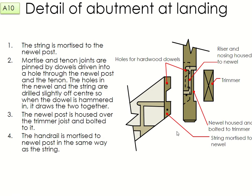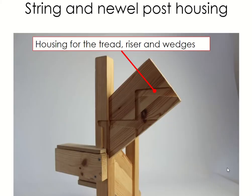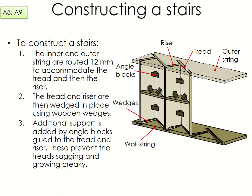You also need to label the parts of the construction image: the riser, the tread, and the two strings — one will usually be up against a wall, one will not. If your stairs is in the middle of the room there'll be a right string and a left string. Usually in most houses the stairs is up against the wall, so you'd label one as the wall string and the other as the outer string. You also need to label the angle blocks and the wedges.